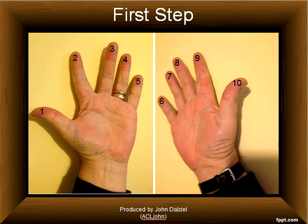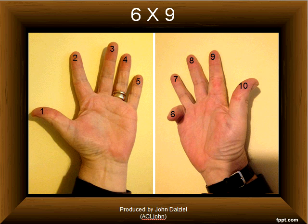The first step to multiplying by nine is to bend over the finger that you're multiplying by. For example, if we want to calculate six times nine, we bend over the sixth finger as shown here.